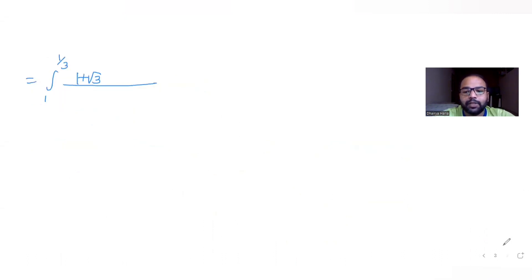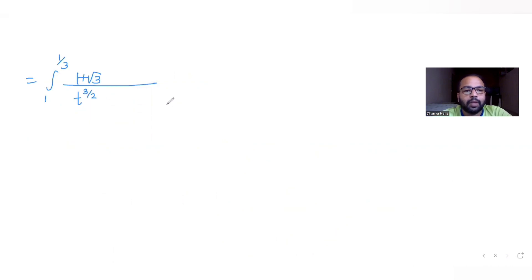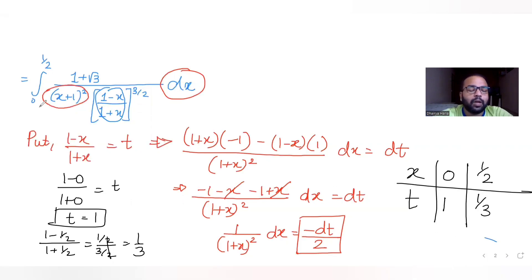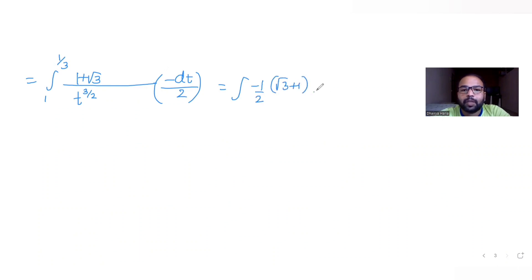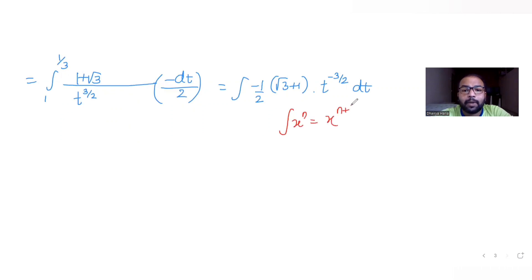Substituting in, (1−x)/(1+x) becomes t, raised to 3/2, and dx/(1+x)^2 becomes −dt/2. The new integral is (1+√3) times the integral from 1 to 1/3 of t^(3/2) times (−dt/2), giving −(1+√3)/2 times the integral from 1 to 1/3 of t^(−3/2) dt. We apply the power rule: integral of x^n = x^(n+1)/(n+1).